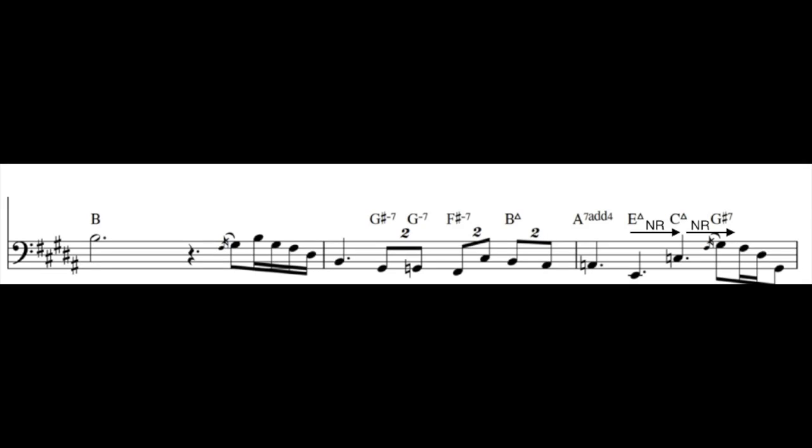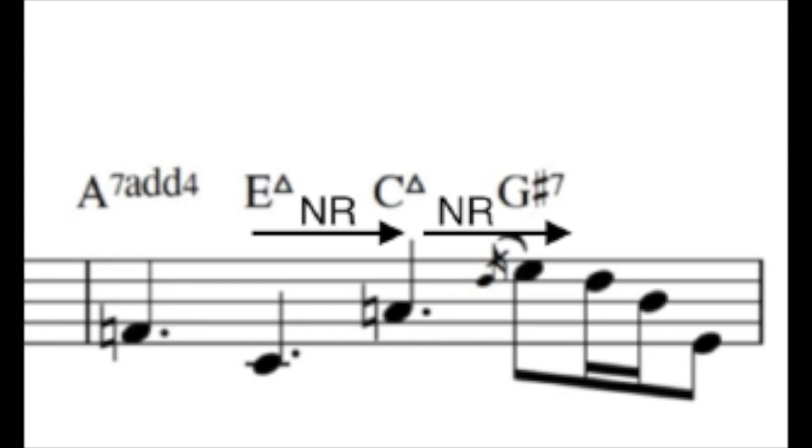In the next example, from the same song, bar 31, we'll have to use some of the more spicy transformations. In order for us to move from E major 7 to C major 7, we have to apply both an N and an R transformation. Applying the N transformation creates an A minor chord, and applying the R to that gives us the C major 7.